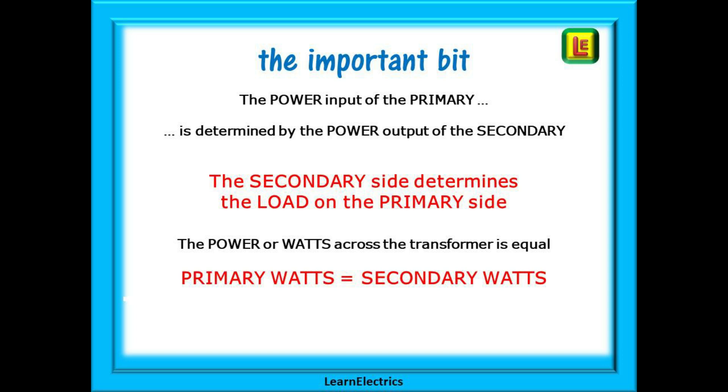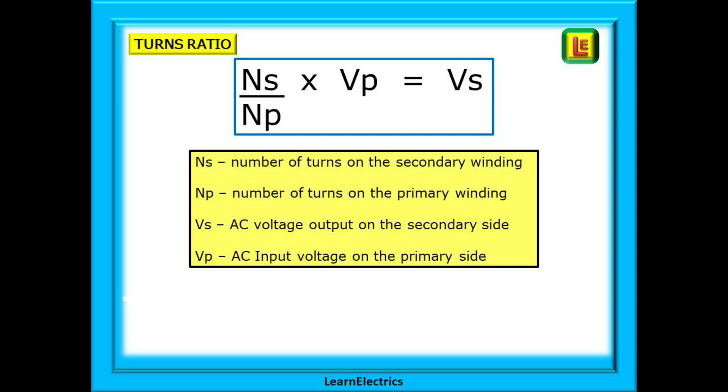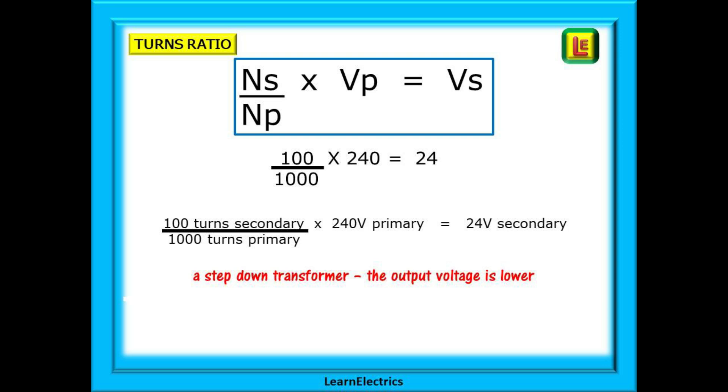This page shows a formula that tells us about the turns ratio and how it affects the voltages. If we divide the number of turns on the secondary winding by the number of turns on the primary, and then multiply this by the input voltage, we will arrive at the secondary voltage, the output voltage. This is shown here in simple numbers, just as an example.